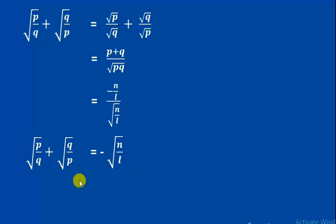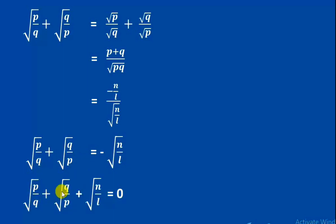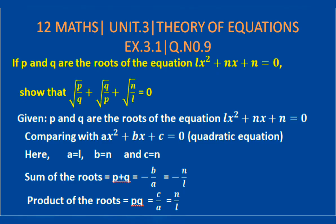Therefore, √(p/q) + √(q/p) = -√(n/l). Adding √(n/l) to both sides: √(p/q) + √(q/p) + √(n/l) = 0. Hence proved.